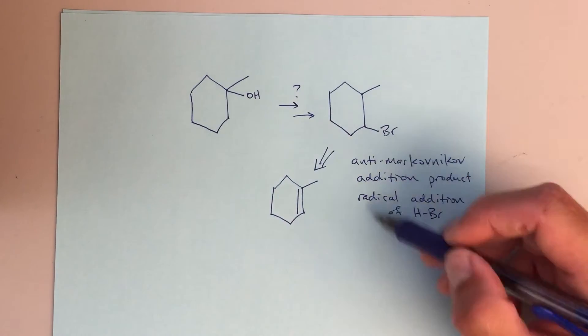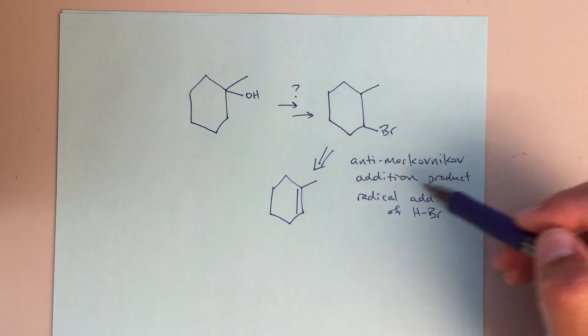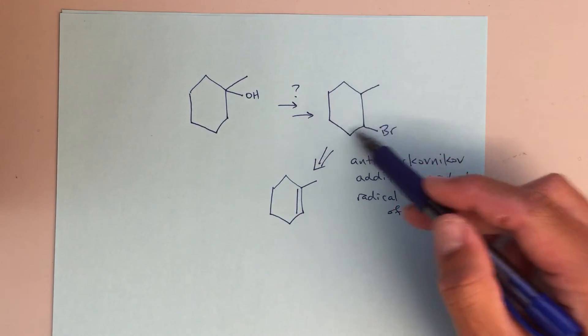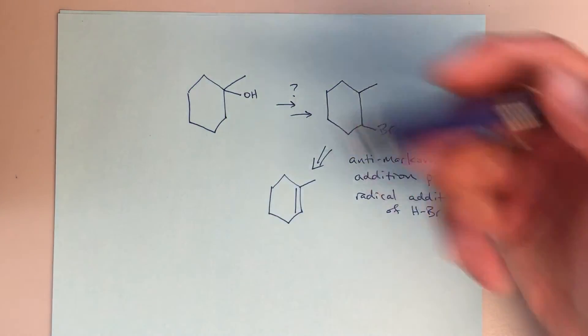So looking at this, I can say, if I can make this alkene, I know that I can add HBr under these radical conditions to form my final product. So then the question becomes, how do I make this alkene from this alcohol?